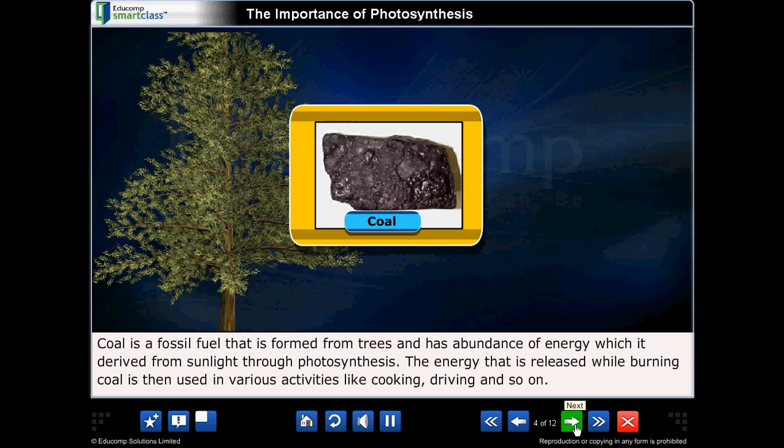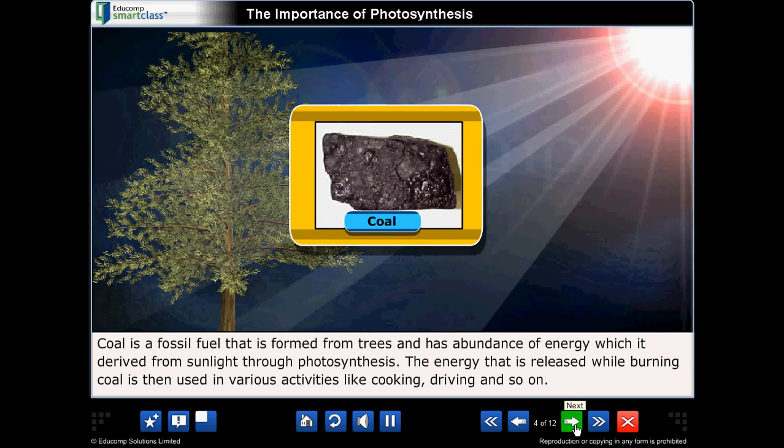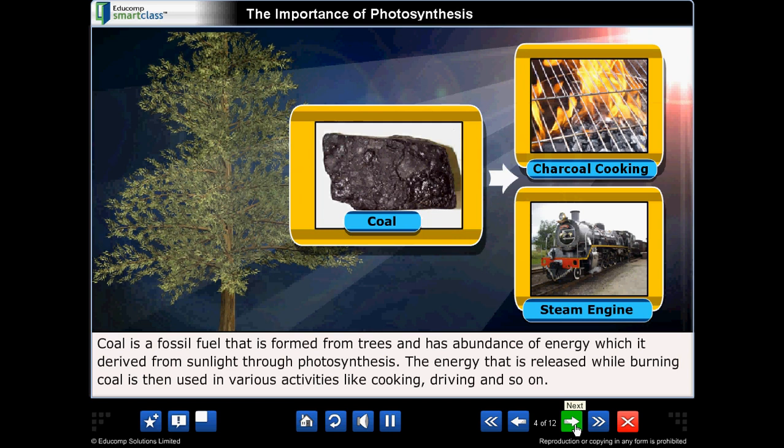Coal is a fossil fuel that is formed from trees and has abundance of energy which it derived from sunlight through photosynthesis. The energy that is released while burning coal is then used in various activities like cooking, driving and so on.